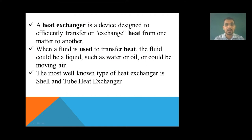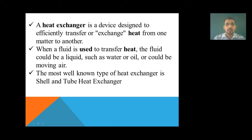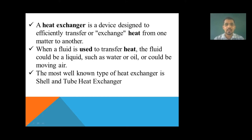There is a front header and a rear header. The front header is used to allow the process fluid to enter, and the rear header is used to allow the process fluid to exit. There is a tube bundle mounted in the shell. The shell is generally used to transfer the hot stream, and the tubes are generally used to transfer the cold fluid. This is the shell and tube heat exchanger from the last lecture.